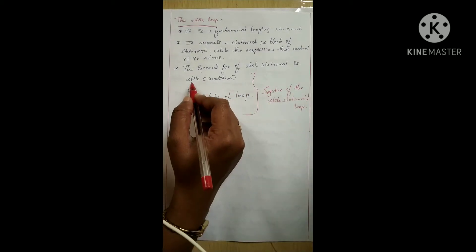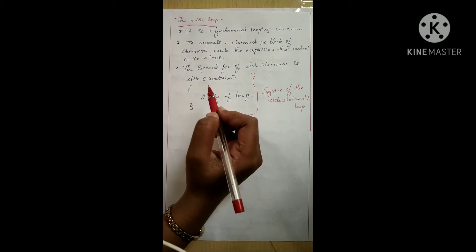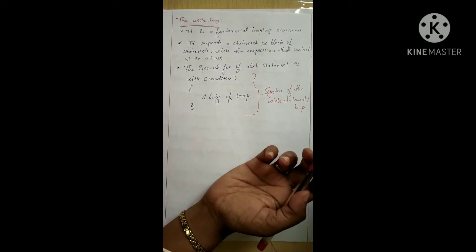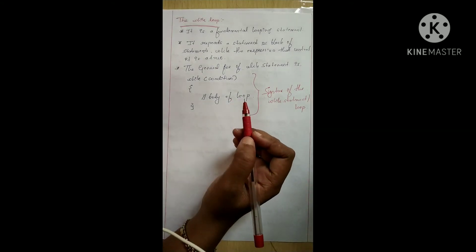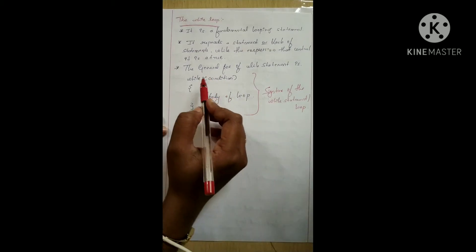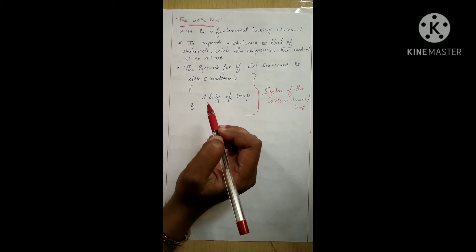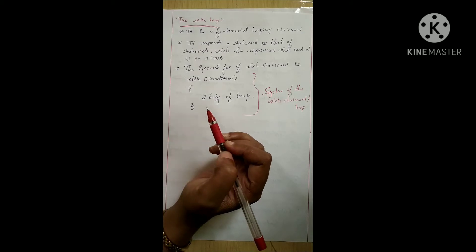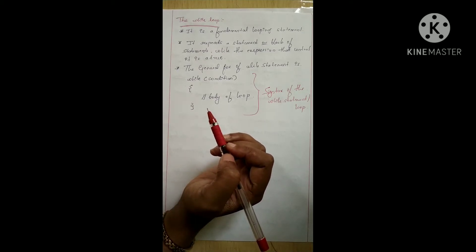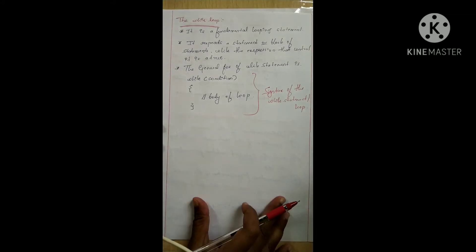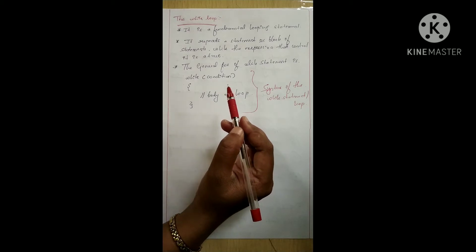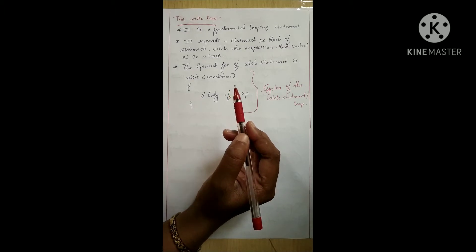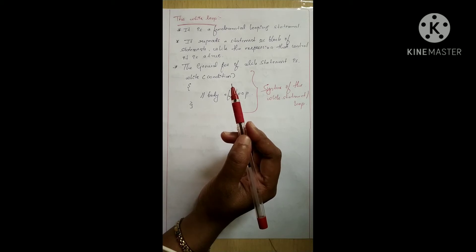The condition can be any boolean expression — either true or false. The body of the loop executes as long as the condition is true. When the condition becomes false, control passes to the line of code immediately following the loop.